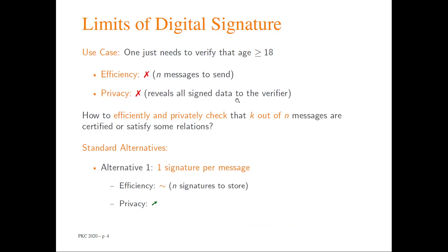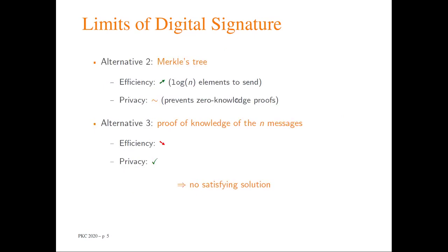In particular, this means that even if I need to check one specific message, I still need to know all the others. So let us consider a use case when one needs to verify that the user's age is over some threshold, for example 18. This means that you will have to send the n other attributes of the users, which is a problem regarding efficiency because you are going to send n messages instead of one, but also regarding privacy because you are going to link a lot of information.